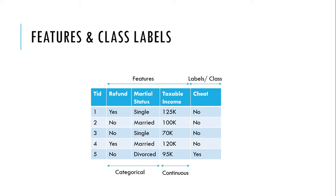Let's talk about the different naming conventions we are going to use while training our model. As you can see, the first three columns are called features — these are the features we use to train our model. The last column is called the label column. So except for the last column, all columns are called feature columns.